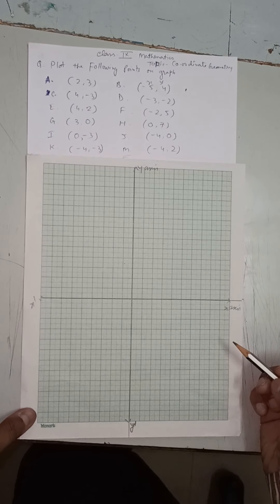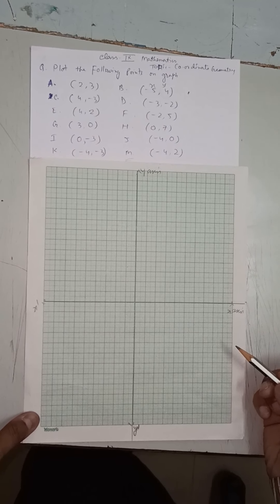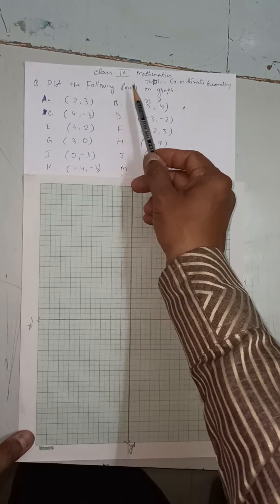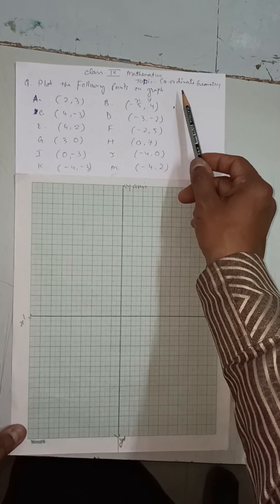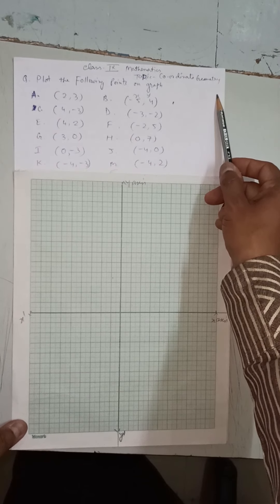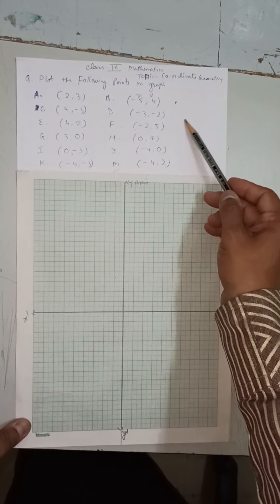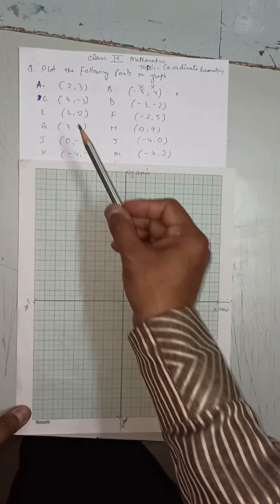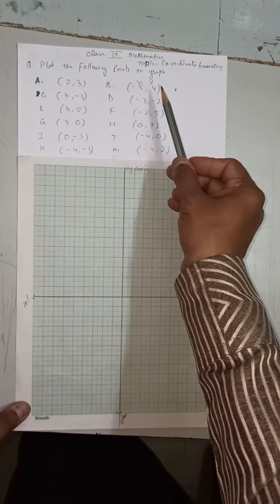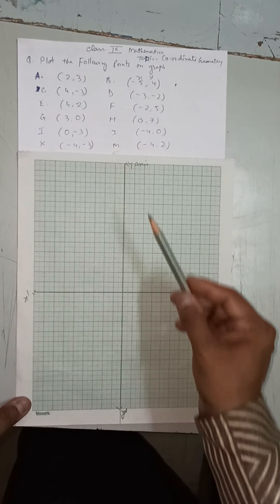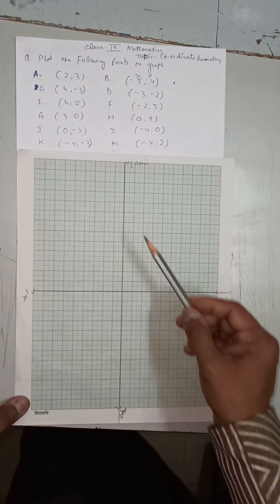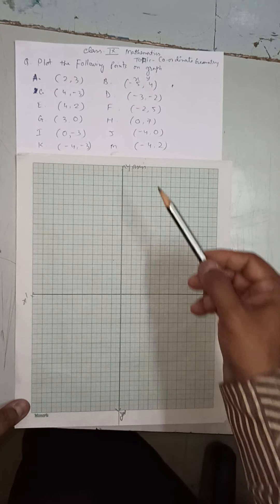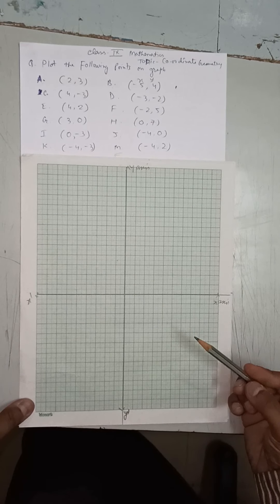Good morning to all of you. Today we are going to teach you mathematics of class 9th and today's topic is coordinate geometry. In coordinate geometry, today we will learn to plot the following points on the graph paper. These are the points A to M — we have to plot all these points on the graph paper.